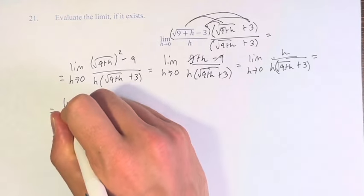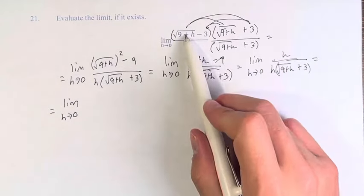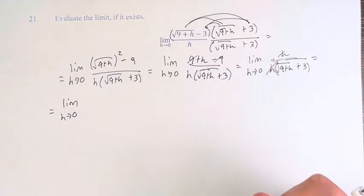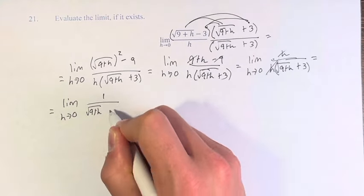Now the reason for doing this is when we multiply this by this, we're just left with h on top, which means it cancels. And we're left with 1 over the square root of 9 plus h plus 3.